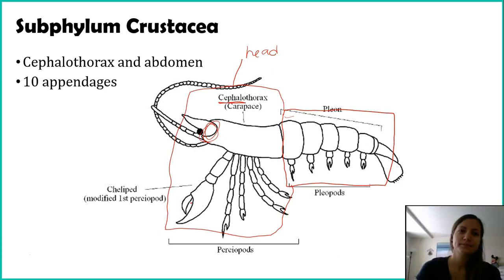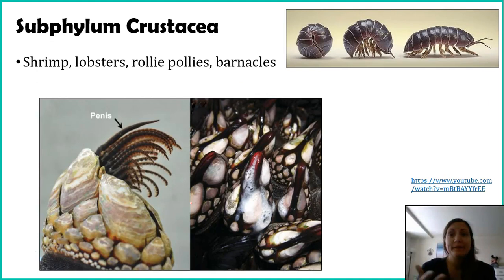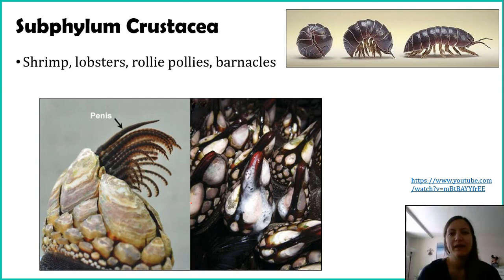Some organisms you may have written down: crabs, lobsters, and crayfish — all totally correct. Some other organisms include shrimp, which look similar to crayfish, so you could probably figure that one out. And roly-polies — I like mentioning these because I like roly-polies. Not all crustaceans are found in water.